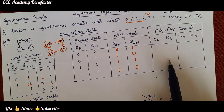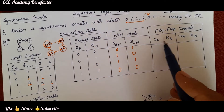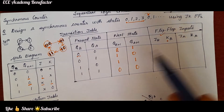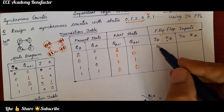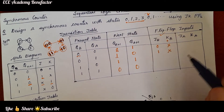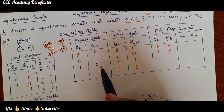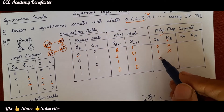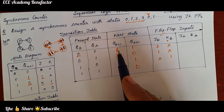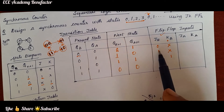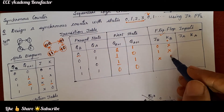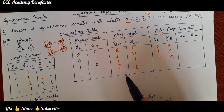Now we need to fill the flip-flop inputs. To fill JB and KB, we look at QB and QB+1. For QB=0, QB+1=0, it is 0X. For QB=0, QB+1=1, it is 1X. For QB=1, QB+1=0, it is X1. For QB=1, QB+1=1, it is X0. Similarly for the remaining rows.